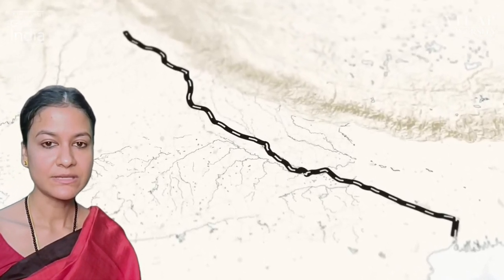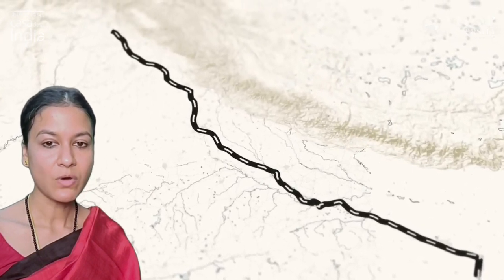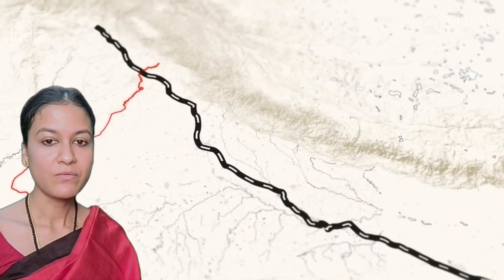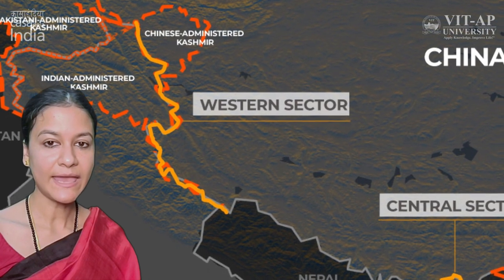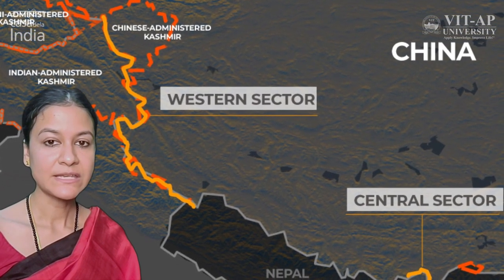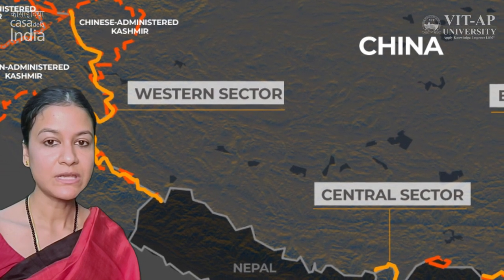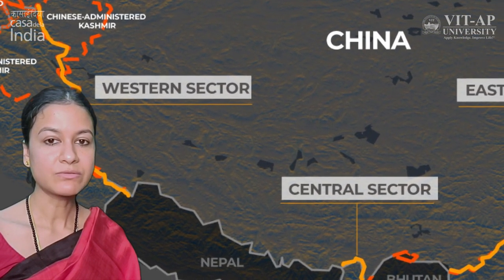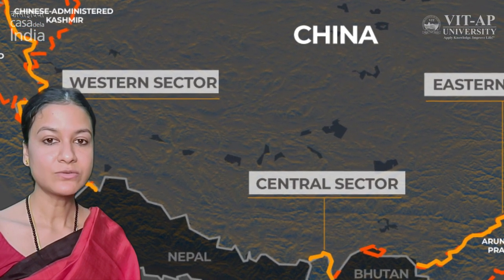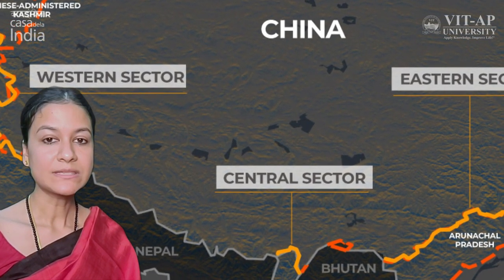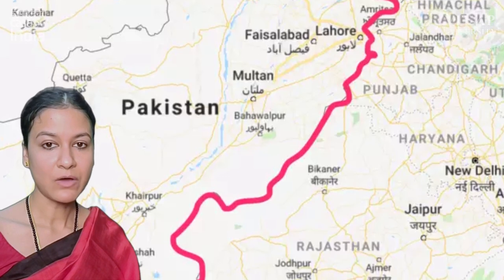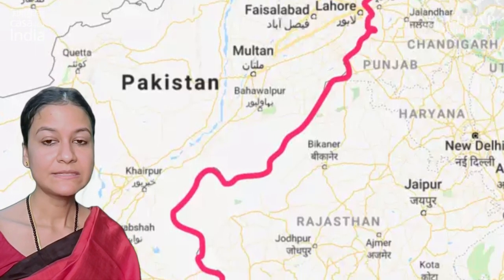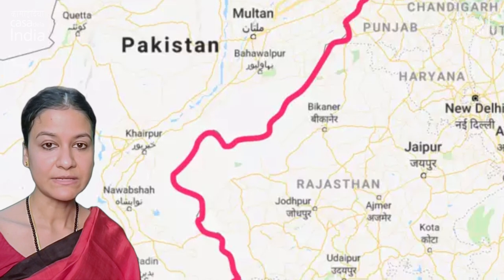India's foreign relations since independence have been largely dominated by her border disputes with China and Pakistan. India and China share 3,488 kilometers of border. In fact, India was the first non-socialist country to establish relations with the People's Republic of China. In 1962, the border conflict led to a serious setback in bilateral relations. The India-Pakistan boundary, on the other hand, is the result of partition in 1947, and since independence the two countries have fought four wars.